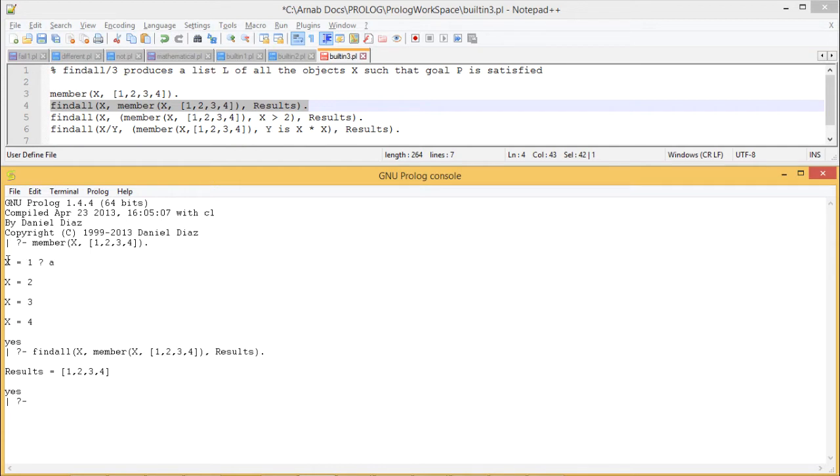We are getting here, you see, we are having this one as X is equal to 1, X is equal to 2, X is equal to 3, and X is equal to 4. And here all the solutions have got listed in a particular list known as the Result.